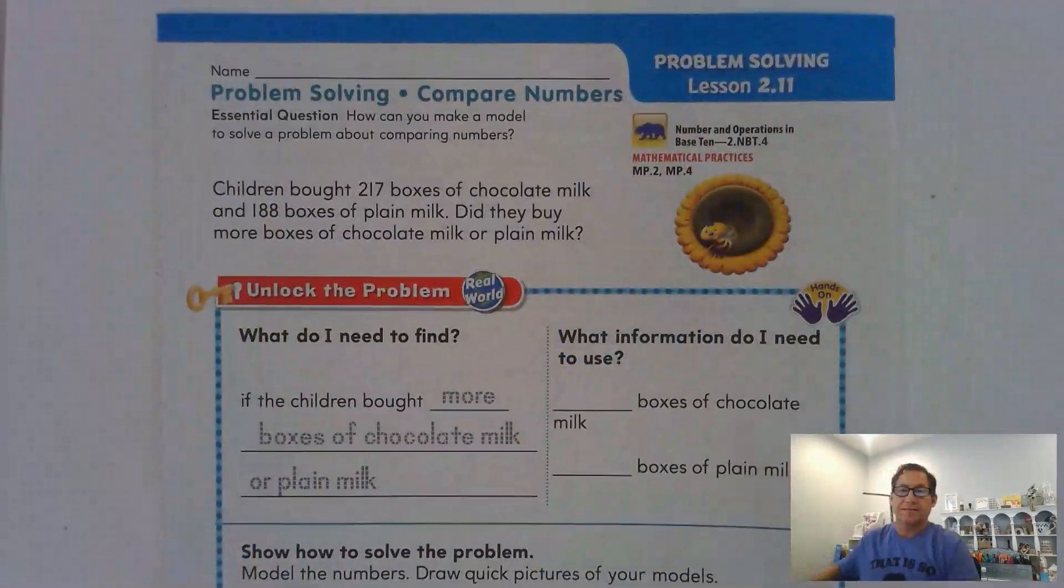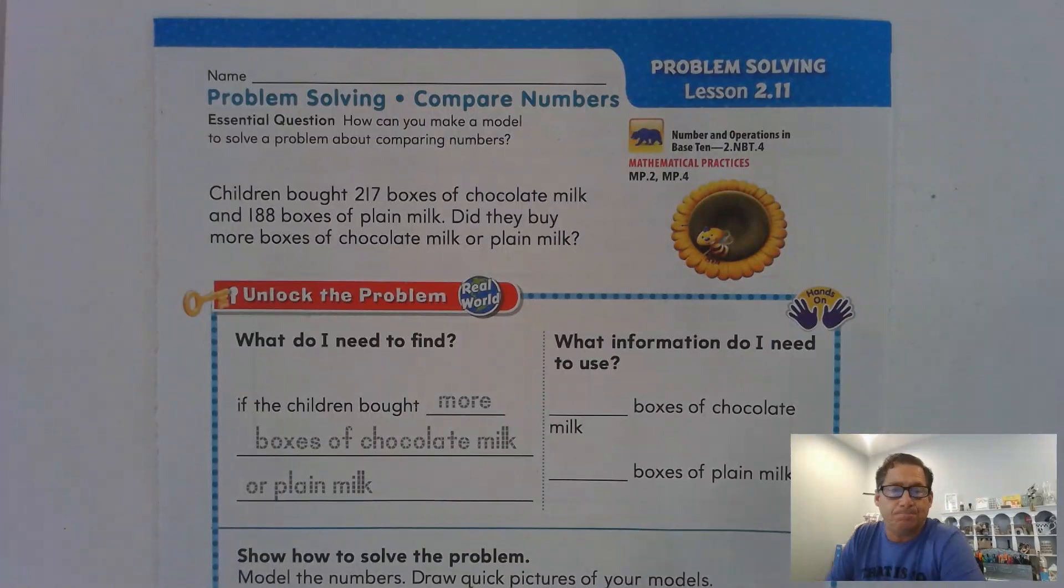Well, today we're going to continue with Lesson 2.11, Problem Solving, Comparing Numbers. And so how can we make a model to solve a problem without comparing numbers? For instance, children bought 217 boxes of chocolate milk and 188 boxes of plain milk. Did they buy more boxes of chocolate milk or plain milk?